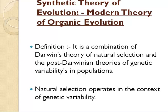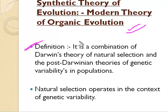Let's start another video, continuing from where we left off in the last video. We will start with the synthetic theory of evolution, also known as the modern theory of organic evolution. Its definition is: it is a combination of Darwin's theory of natural selection and post-Darwinian theories of genetic variabilities in population.